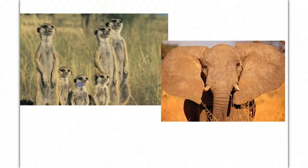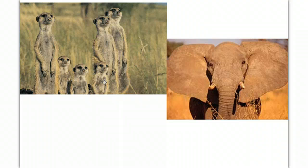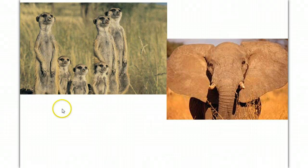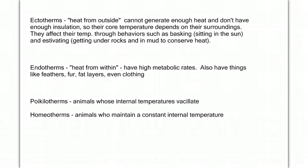Take meerkats as an example. You see them on Animal Planet standing up in the mornings facing the sun. The myth is they were praying, but in reality, meerkats live in the desert where days are warm but nights are very cold. They don't have thick fur or a thick fat layer, so their body temperatures drop at night. In the mornings, they face the sun and open up the broad side of their body to warm up and become active. Hummingbirds similarly will flap their wings rapidly in the morning to generate heat after losing so much overnight. So just because they're endotherms doesn't mean they're great homeotherms — they don't maintain a constant temperature very well.